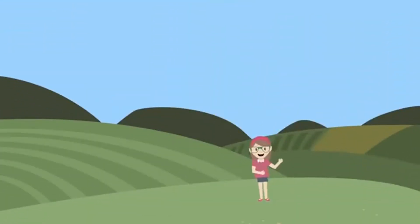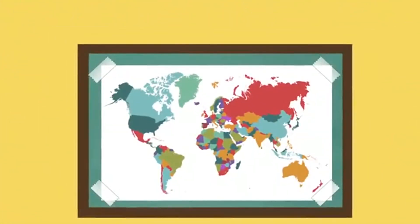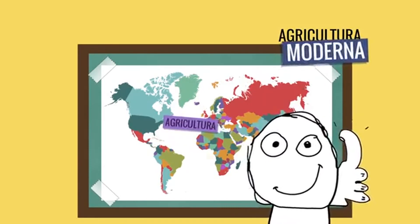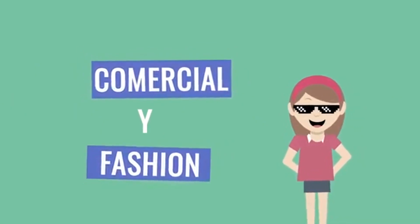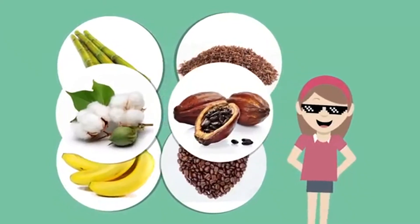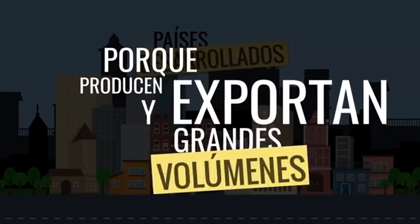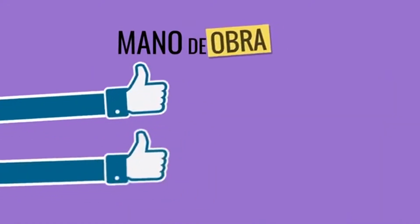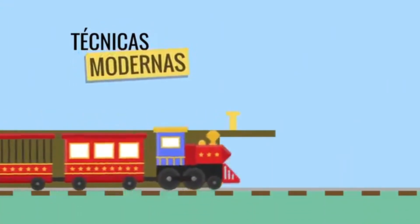Lo que se produce en la agricultura migratoria es solo para la familia. Ahora imagina la agricultura moderna, que predomina en el Golfo de Guinea, Brasil o las Antillas. Es más comercial: Helga se dedicaría al cultivo de la caña, el tabaco, plátano, café, algodón y cacao. Este tipo de producción, mayormente en países desarrollados, produce y exporta grandes volúmenes, emplea mucha mano de obra nativa, utiliza técnicas modernas y en ocasiones dispone de vías férreas y puertos propios.